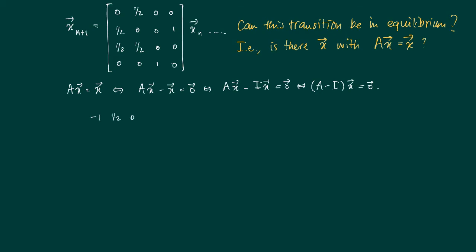So actually what we're going to do is solving the system with augmented matrix. On the left-hand side we write A minus the 4×4 identity matrix, and on the right-hand side we get the 0 vector over here.